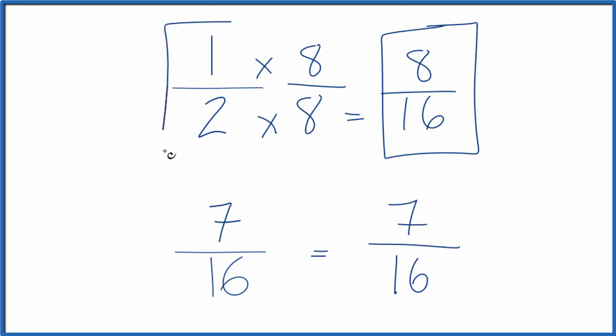And 1 half, that's going to be greater than 7 sixteenths. So by finding this common denominator, we can compare the numerators, figure out which one of these is going to be bigger. The answer, one half.